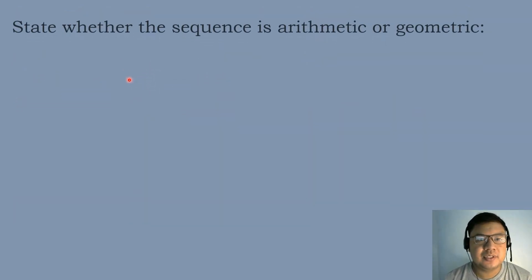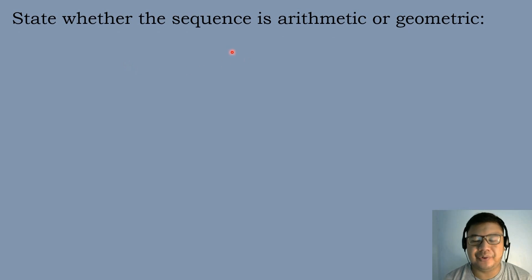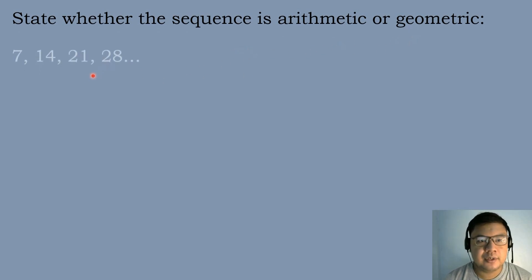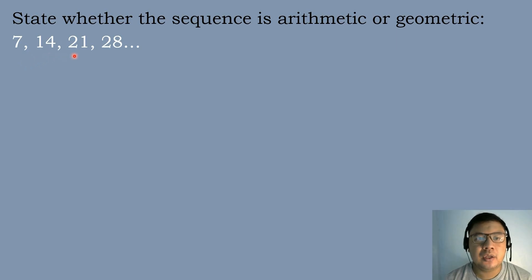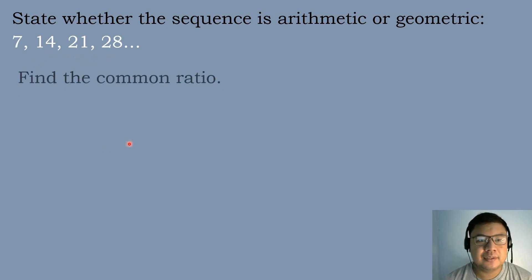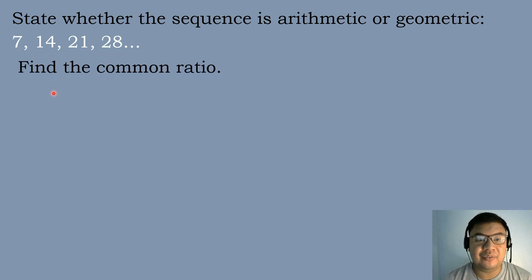Let's have another example: state whether the sequence is arithmetic or geometric. We have the sequence 7, 14, 21, and 28. Let's find the value of the common ratio first. If the value of the common ratio is equal, therefore it is a geometric sequence.